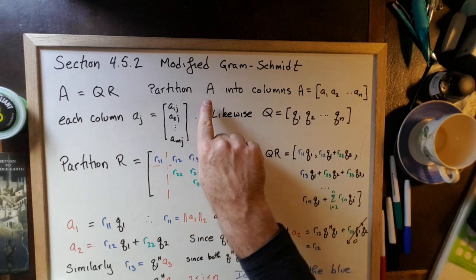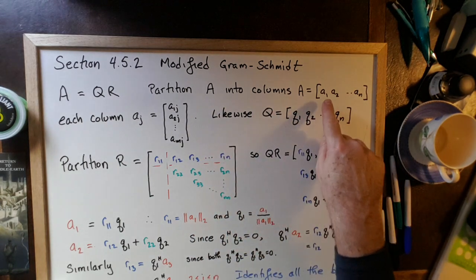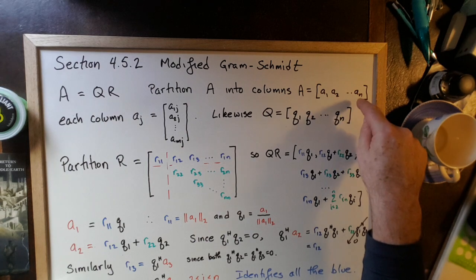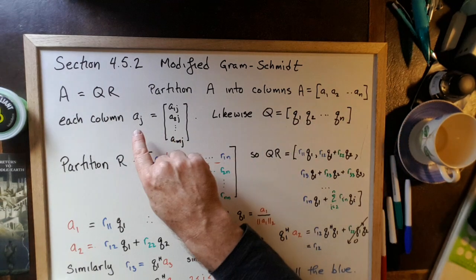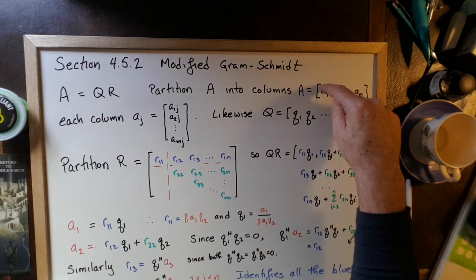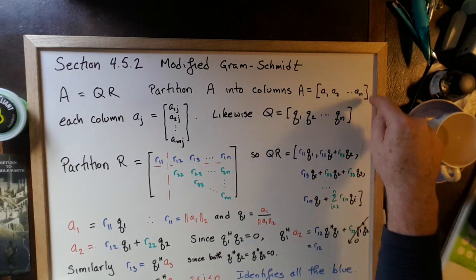So what we're going to do is we're going to partition the matrix A into columns. So A1, A2, etc. They look like scalars, but they're not. Each of these A subscript Js is in fact a whole column vector. So the matrix A has been partitioned in columns.